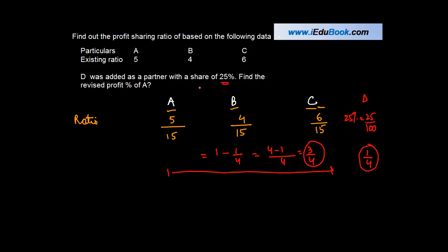You are told to find out what is the revised percentage, the revised profit percentage of A. So the revised profit percentage of A is going to be 5 upon 15. His share was 5 upon 15. So if nothing is given we assume that the ratio of these old partners will remain the same. So he will own 5 upon 15 of 3 upon 4.